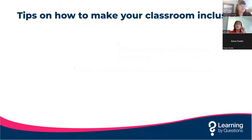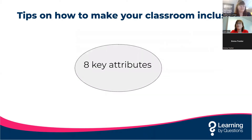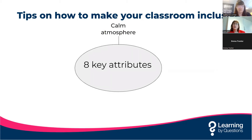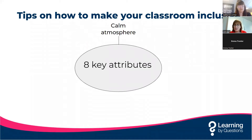The other thing that has been a massive game changer for me is LBQ, simply because again I can see everybody's answers and I know who I need to target from a maths perspective. And that's the thing — if something is actionable, you can do something about it. So I'm going to move forward and look at a few tips on how to make your classroom inclusive. I've come up with eight key attributes, though this is by no means exhaustive. The first is a calm atmosphere — admittedly tricky in a secondary school. If you've got a calm atmosphere, it ensures your classroom is welcoming and as stress-free as possible.